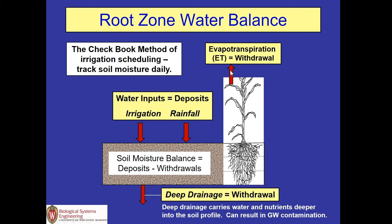One component of the root zone water balance shown here is evapotranspiration — the water that's drawn up from the soil through the plant and released through the plant's leaves, so that's a withdrawal. Water inputs are equal to deposits: our first one being irrigation, the amount of irrigation water you supply to the root zone. Rainfall also acts as a deposit or an addition of water to the root zone.